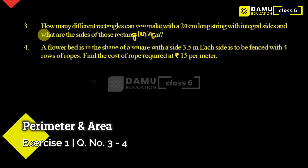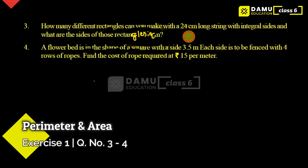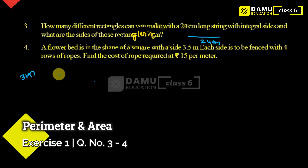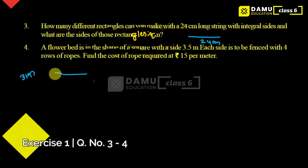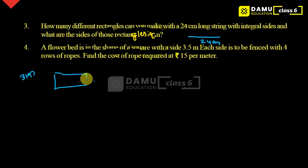The third question is: how many different rectangles can you make with a 24 centimeter long strip with integral sides, and what are those sides in centimeters? We have to make the strip as a rectangle, so let's draw a rectangle like this.